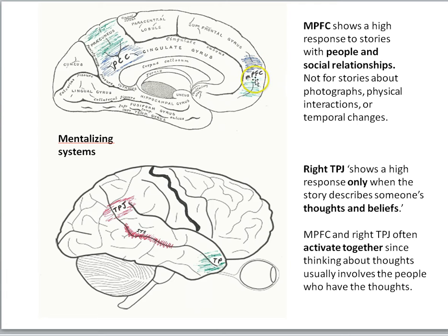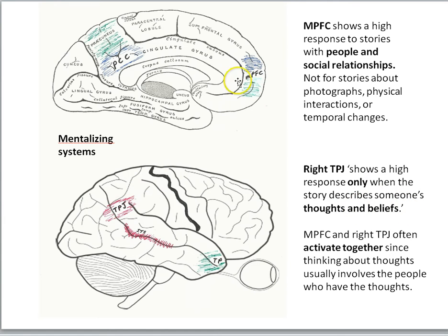The medial prefrontal cortex shows high activity for stories with people or social relationships, but does not show activity for stories about photographs, physical interactions, or temporal changes. So we can think of the medial prefrontal as being turned on by stimuli involving people or social relationships. But the right temporoparietal junction shows more specificity — it shows a high response only when the story describes someone else's thoughts and beliefs. You often get co-activity of these regions in tasks that study mentalizing, but we focus on the temporal parietal junction.